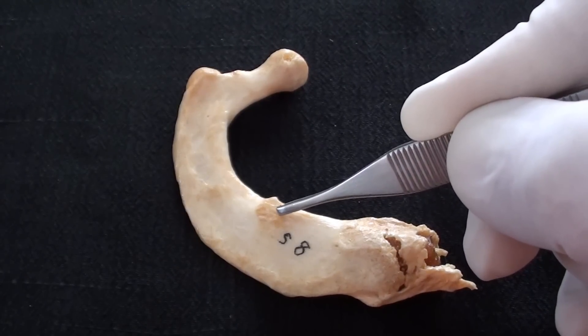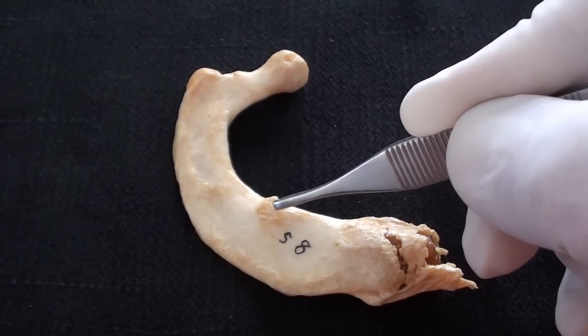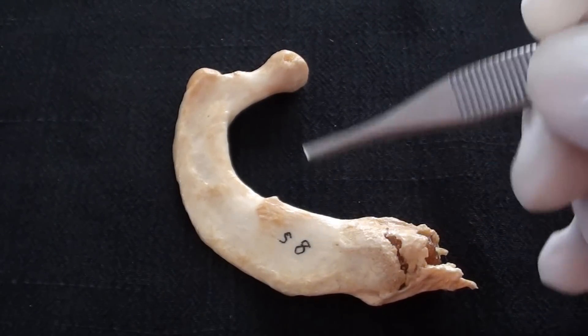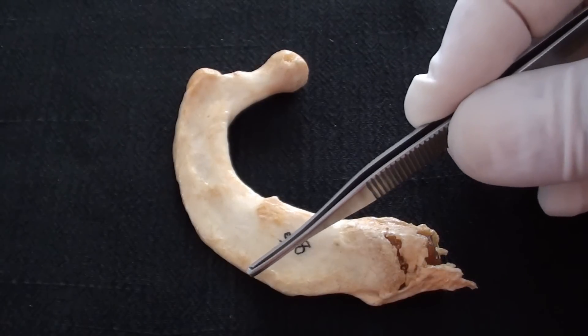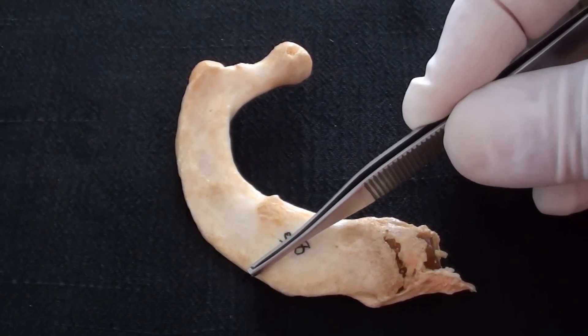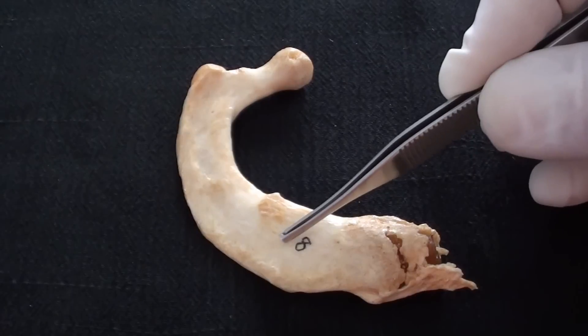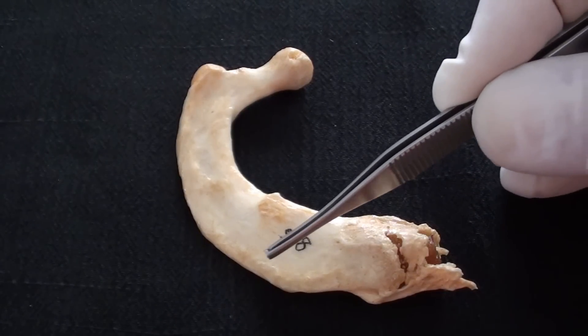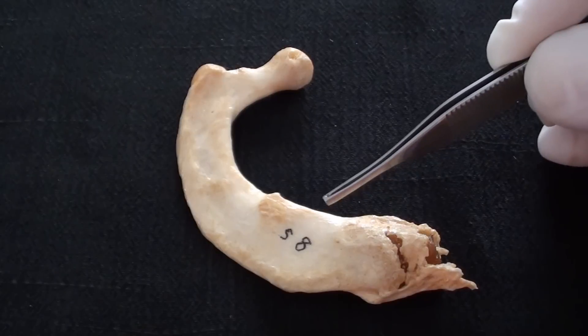However, much more important is to understand that further anterior to the rib comes a groove that runs across the upper surface of rib number one and that groove is marked as the sulcus surface of the subclavian vein.